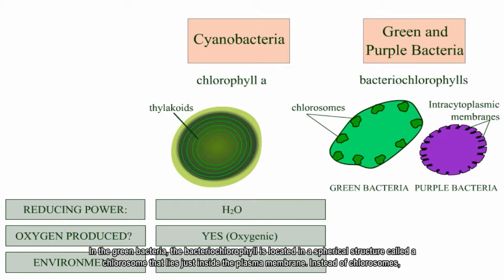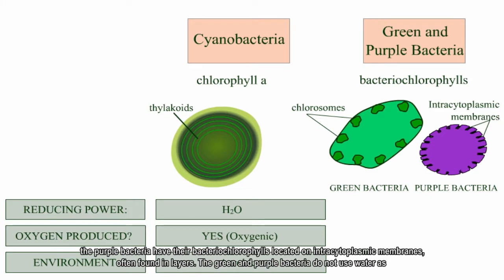In the green bacteria, the bacteriochlorophyll is located in a spherical structure called a chlorosome that lies just inside the plasma membrane. Instead of chlorosomes, the purple bacteria have their bacteriochlorophylls located on intracytoplasmic membranes, often found in layers.